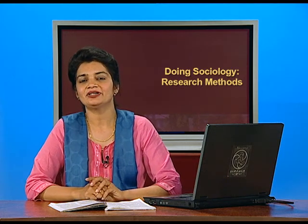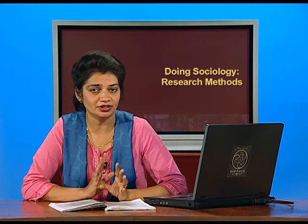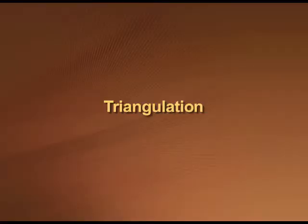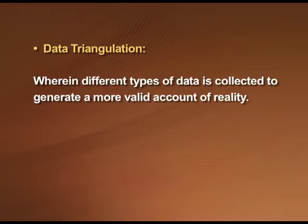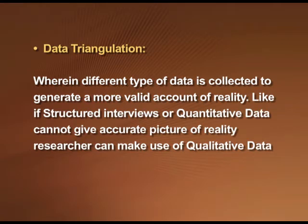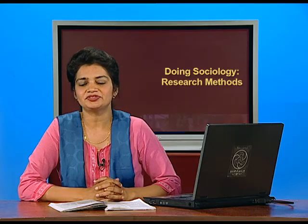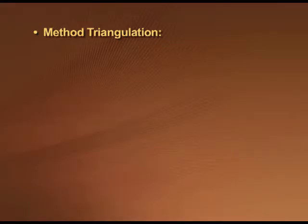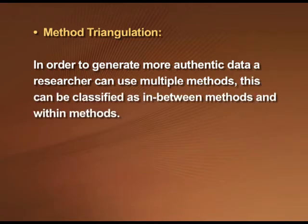Researchers often combine methods in such a way that the strength of a particular method can be used to offset or overcome the limitations of another method. This is called triangulation. Triangulation can be divided into different types. The first type is data triangulation, where different types of data are collected to generate a more valid account of reality — for example, supplementing quantitative structured interview data with qualitative data. The second type is method triangulation, where a researcher uses multiple methods to generate more authentic data. Method triangulation can be further classified into in-between methods and within methods.